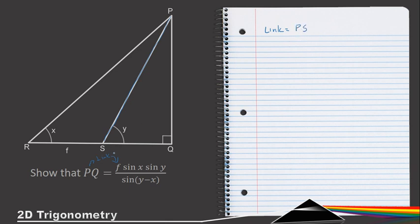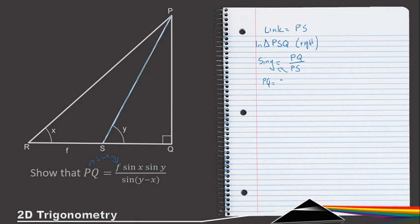To get PQ in terms of the link, we work in triangle PSQ, which is right-angled. From angle y, we have opposite over hypotenuse, so sin(y) = PQ / PS. Isolating PQ gives us PQ = PS·sin(y). That's the first half of our solution done.